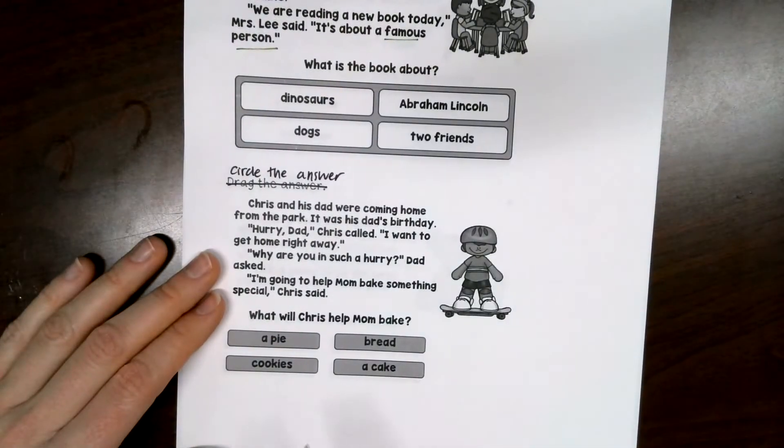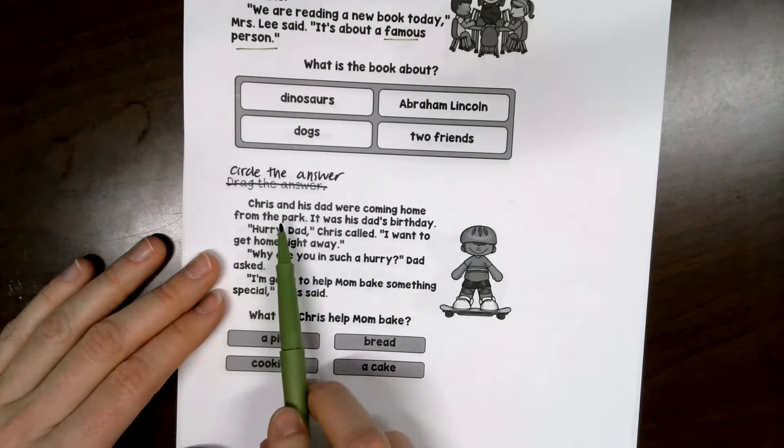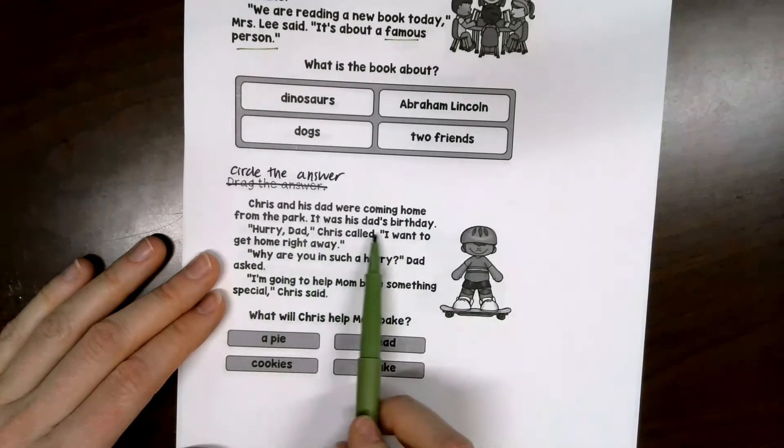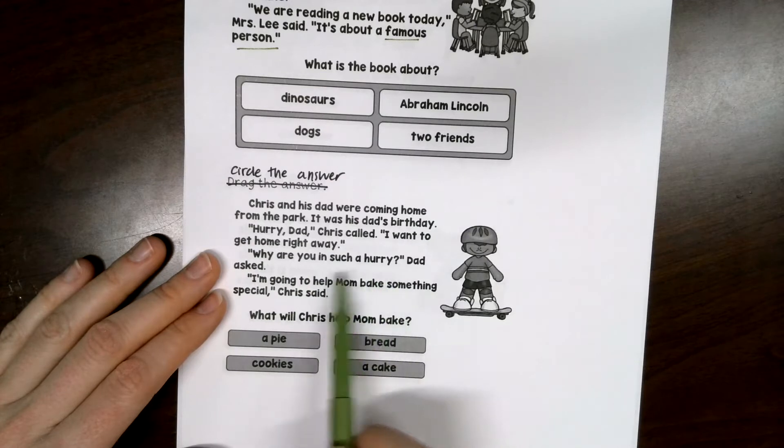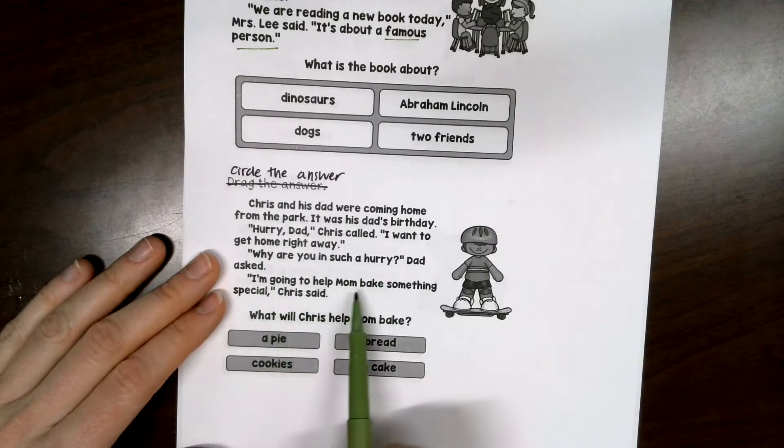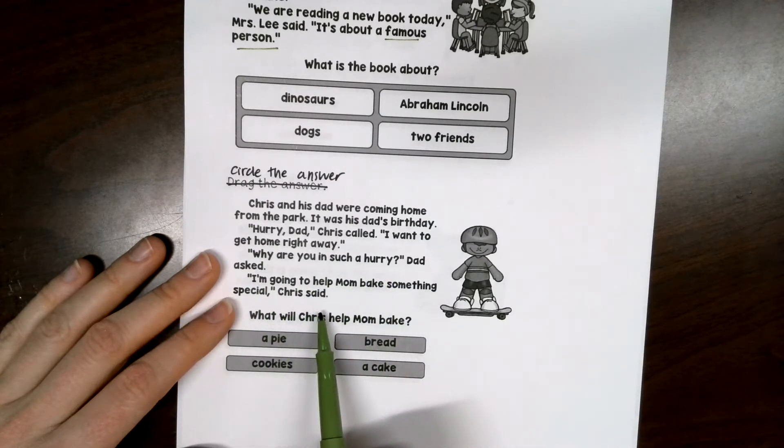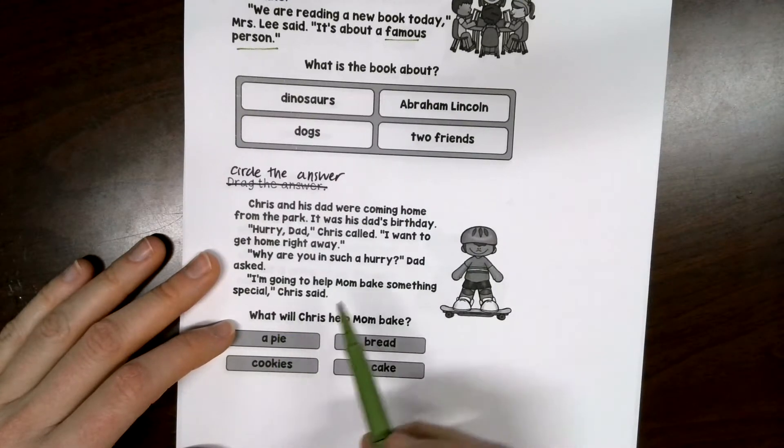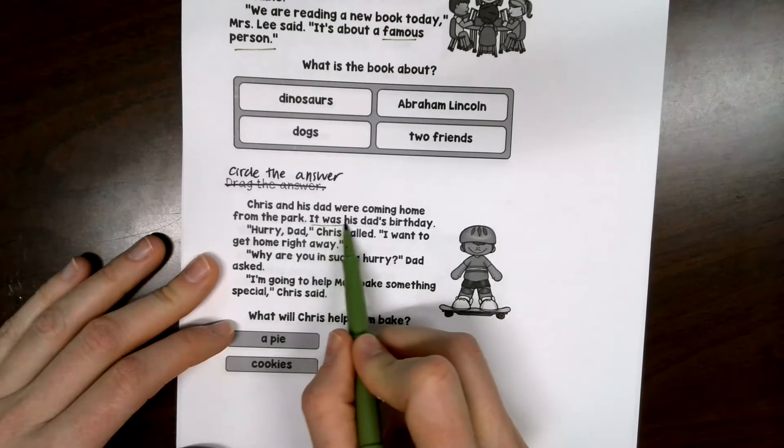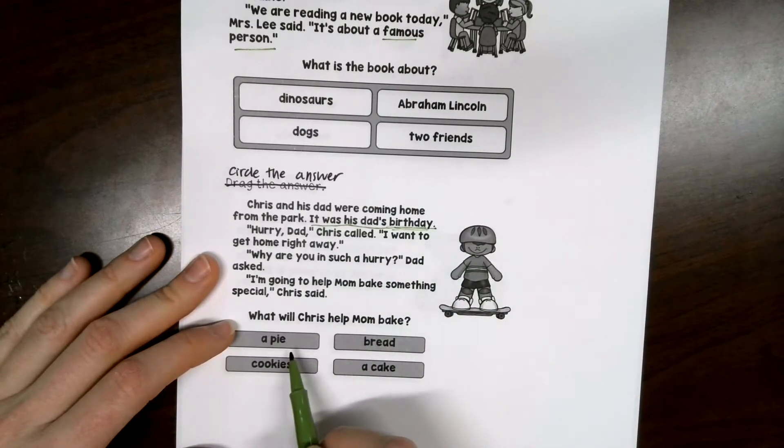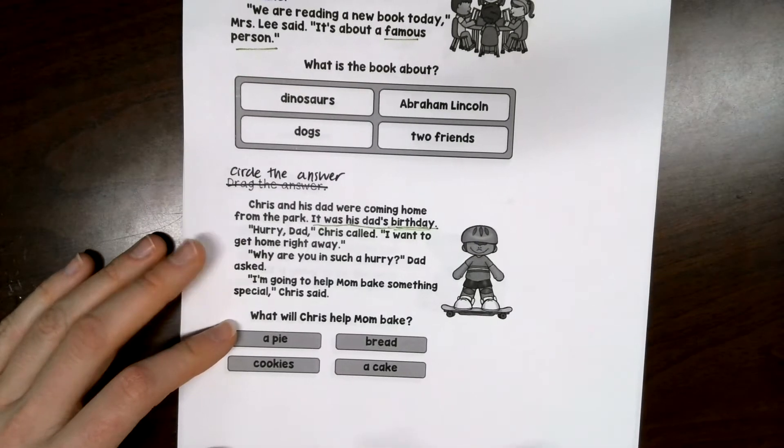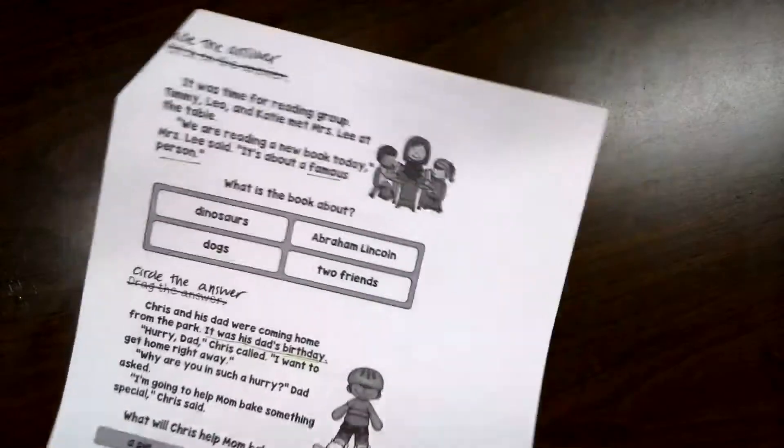And our last inference question. Chris and his dad were coming home from the park. It was his dad's birthday. Hurry, Dad, Chris called. I want to get home right away. Why are you in such a hurry, Dad asked. I'm going to help Mom bake something special, Chris said. What will Chris help his mom bake? Remember, it was his dad's birthday. What are they going to help bake? A pie, bread, cookies, or a cake?